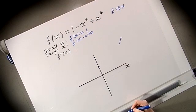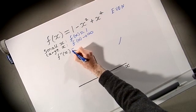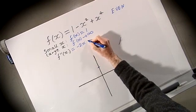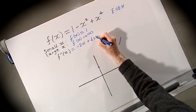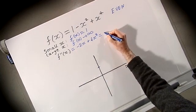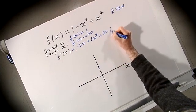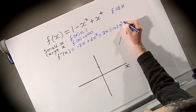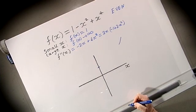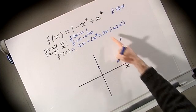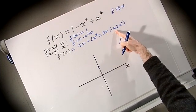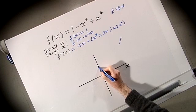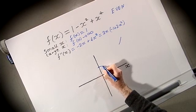Looking at the derivative, f'(x) = -2x + 4x³, which we can write as 2x(-1 + 2x²). When x is small but positive, the factor 2x is positive and the factor (-1 + 2x²) is negative, so f'(x) is negative. Therefore the function is decreasing when x is positive but small.